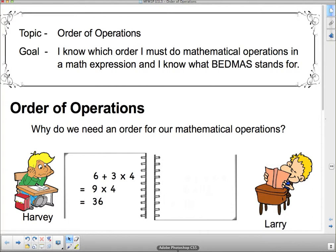Well, Harvey decides to do it in the order that it's written. He takes 6 and he adds 3, and he gets 9. So that's this part here. And now he's going to do the times 4, and 9 times 4 is 36. Now, Larry decides he doesn't want to add first. He's going to multiply first. So he does the 3 times 4 is 12 first, and then adds the 6 from the front to get 18.